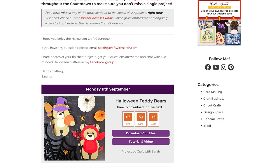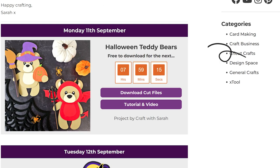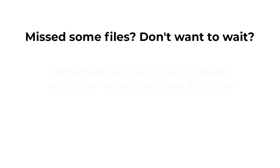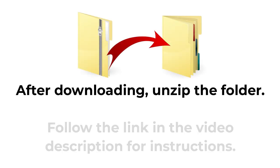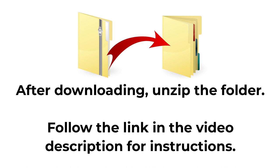Scroll down the page to find today's project and click the button to start the files automatically downloading to your computer or mobile device. Each download is only available for free for 24 hours after it goes live. If you've missed some, check out the instant access bundle at craftwithsarah.com/hcc23bundle, which gives immediate and ongoing access to all of the files from the Halloween Craft Countdown plus loads of extra bonus designs. All downloads come in zip folders — you will need to unzip them before you can upload the files into Cricut Design Space.